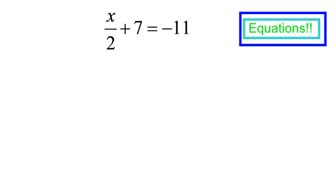We are going to do a video on equations. You need to get good at equations. They are not going to go away for a while. Our first equation: x over 2 plus 7 equals negative 11.